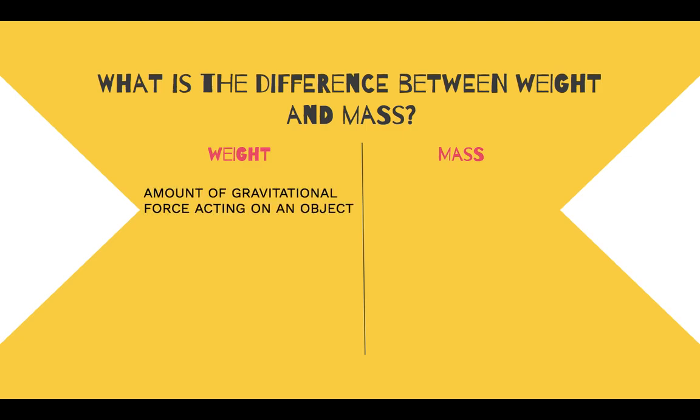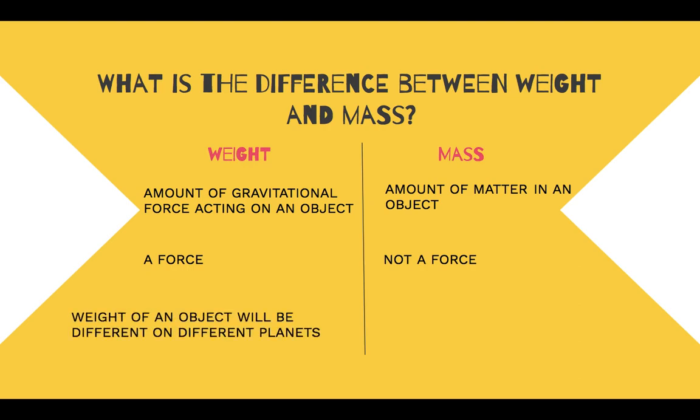Weight is the amount of gravitational force acting on an object, while mass is the amount of matter in an object. Weight is a force, while mass is not a force. Weight of an object will be different on different planets, while mass remains the same.